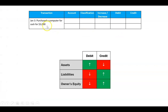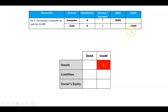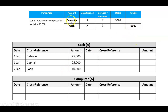On January 3rd, purchased a computer for cash for $3,000. There's a new asset called computer — it's increasing, so that's a debit. To pay for it, cash is an asset that's decreasing, so that's a credit. I enter the date and debit of $3,000 in the computer ledger, then the date and credit of $3,000 in cash. Cross-references: in computer I write 'cash,' and in cash I write 'computer.'